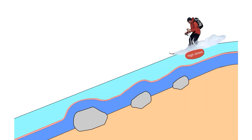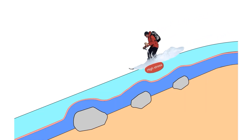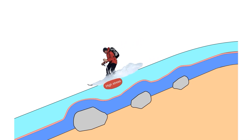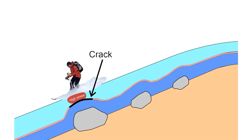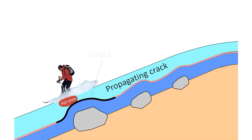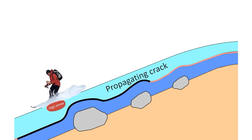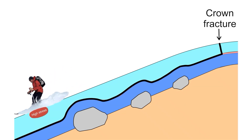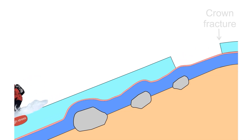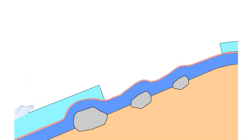The moving rider stresses the upper snowpack, as shown by the red bulb. The stress under the skier causes a brittle crack, shown in black. If the crack is longer than what is called a critical crack length, the crack propagates beyond the stressed area under the rider. It propagates in the weak layer away from the trigger point, including up the slope. The crown and other boundaries of the slab fracture, releasing the slab, which slides down the slope.